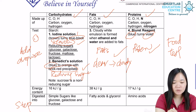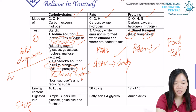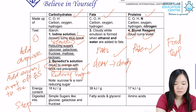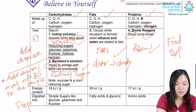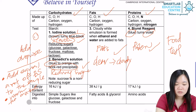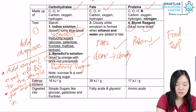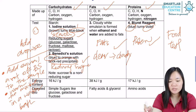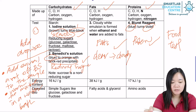The Benedict solution test is quite easy as well. You just add an equal amount of Benedict solution to the sample. There is something very special here — you need to warm the mixture in a water bath. This is special; the other tests don't require heating through a water bath. Only the reducing sugar test is special in this way.